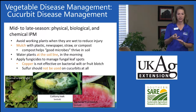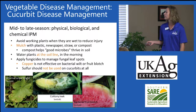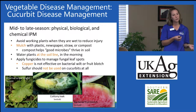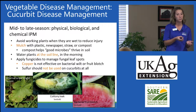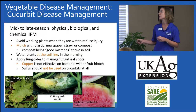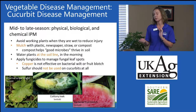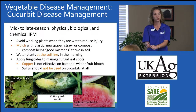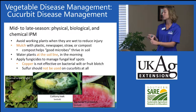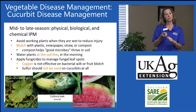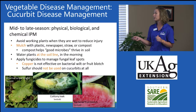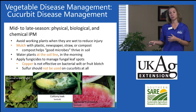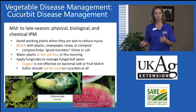Mulch is very important in the home garden for weed management and introduction of organic material. Fungicides can be applied to manage fungal leaf spots. Copper is the only chemical approach home gardeners have for bacterial diseases, but in cucurbits, copper is not effective on bacterial wilt — because that pathogen is so closely associated with the beetles — and it's also not effective on bacterial fruit blotch, because that pathogen is seed-transmitted. Additionally, sulfur should not be used on cucurbits at all, leaving relatively few organic chemical approaches for cucurbit disease management.